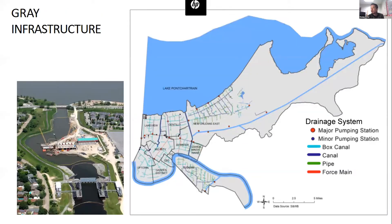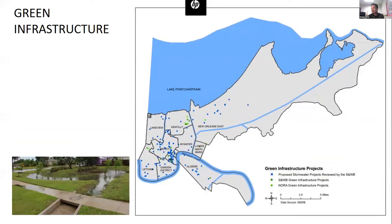Gray infrastructure collects stormwater runoff and sends it to pump stations through canals, mains, and pipe, which held up during this year's Hurricane Ida. Here's a green infrastructure map, which is a nature-based solution for passive process of retention and filtration. Our city is becoming the leading example of these alternative ecosystem services.